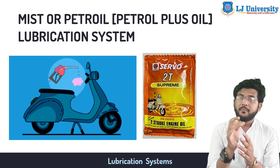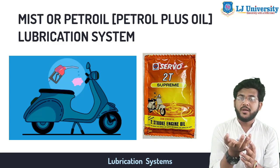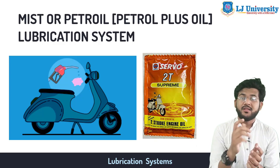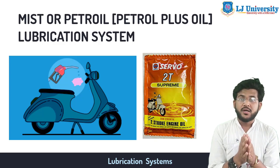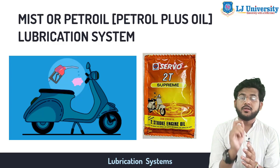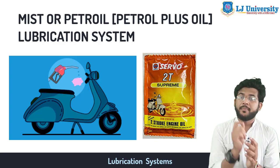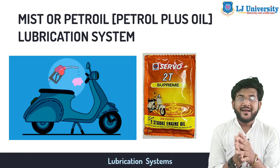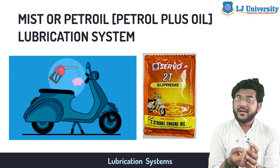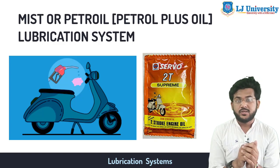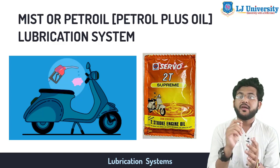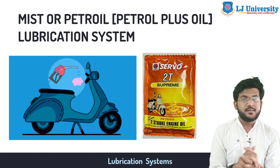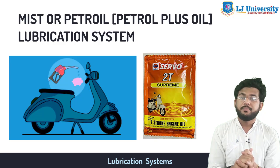The lubrication oil — approximately 2 to 4 percent — is mixed with petrol in the fuel tank whenever you fill the petrol. The oil and fuel mixture is inducted through the carburetor. The optimum fuel-to-oil ratio used is actually 50 to 1. Petrol gets evaporated and the oil lubricates the main parts of the cylinders. The fuel-oil ratio is very important for good performance of the engine in this system. It is called simple mist lubrication.